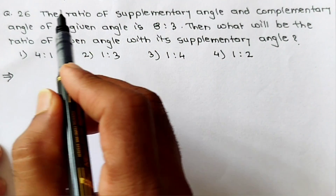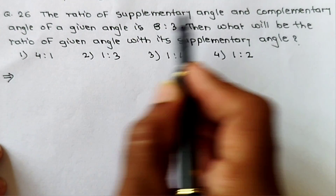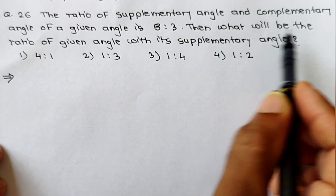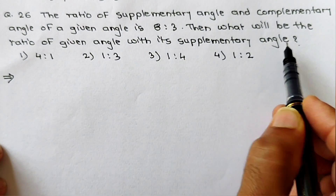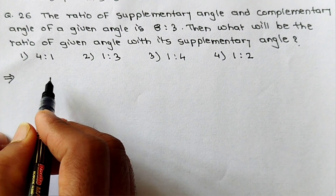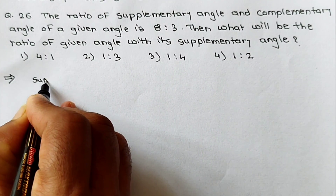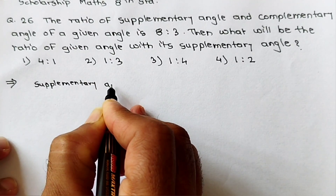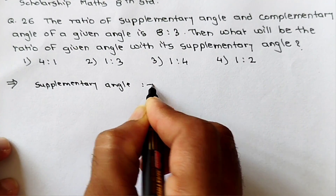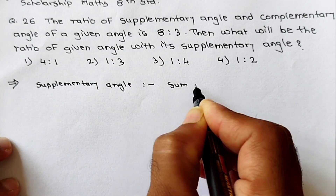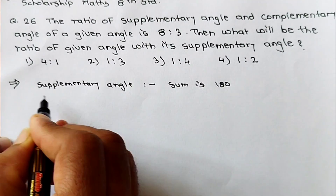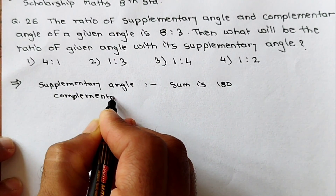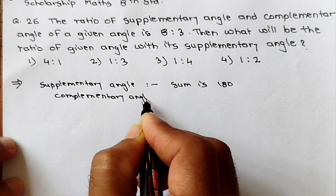Question number 26: the ratio of supplementary angle and complementary angle of a given angle is 8 is to 3. What will be the ratio of the given angle with its supplementary angle? First, let's understand: supplementary angle means the sum is 180 degrees, and complementary angle means the sum is 90 degrees.